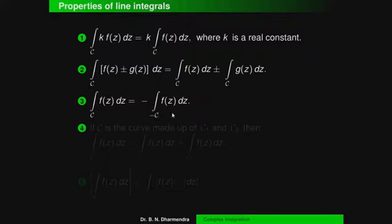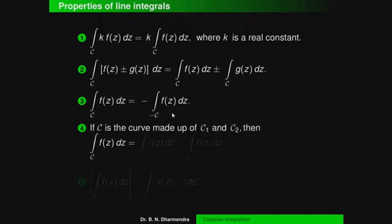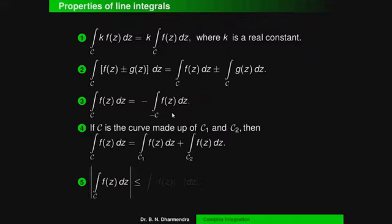Property 4 — If curve C is made up of two curves C1 and C2, i.e., C = C1 + C2, then ∫_C f(z)dz = ∫_{C1} f(z)dz + ∫_{C2} f(z)dz. Property 5 — |∫_C f(z)dz| ≤ ∫_C |f(z)||dz|.